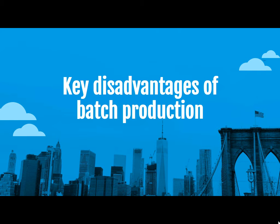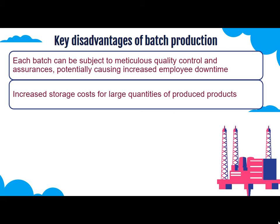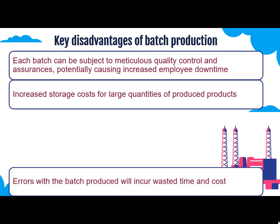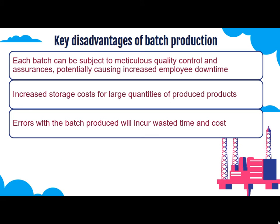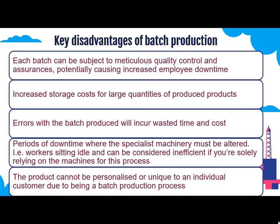Now we will understand the key disadvantages — that is, the demerits of batch production. Each batch can be subject to meticulous quality control and assurance, potentially causing increased employee downtime. There are increased storage costs for large quantities of produced products. Errors within a batch will incur wasted time and cost. Periods of downtime occur where specialist machinery must be altered, with workers sitting idle, which can be considered inefficient if solely relying on machines. One key disadvantage is that the product cannot be personalized or unique to an individual customer due to the batch production process.